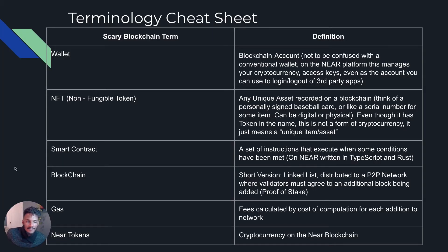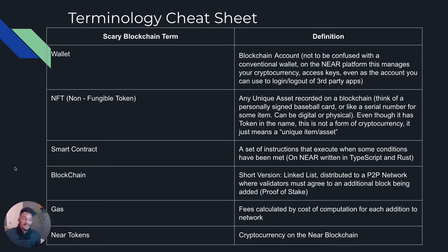A smart contract is a set of instructions that executes when some conditions have been met on the Near platform, written in TypeScript or Rust. Next up is blockchain — the short version: it's a linked list that exists on a distributed peer-to-peer network in which validators must agree to add an additional block onto the blockchain. That agreement process is called proof of stake. The other version is proof of work, which is essentially what Bitcoin runs on when you're mining. On the Near network, we utilize the proof of stake method.